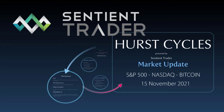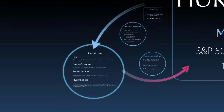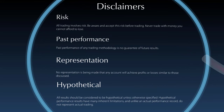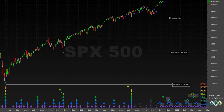It is the 15th of November 2021. My name is David Hickson and in today's market update we're going to be taking a look at the S&P 500 and the Nasdaq and a quick look at Bitcoin to update ourselves in terms of what is happening to those instruments and the cycles that are influencing them. Markets have been behaving exactly as we have been expecting, but there are nevertheless some comments to be made. So let's start by taking a look at the S&P 500.